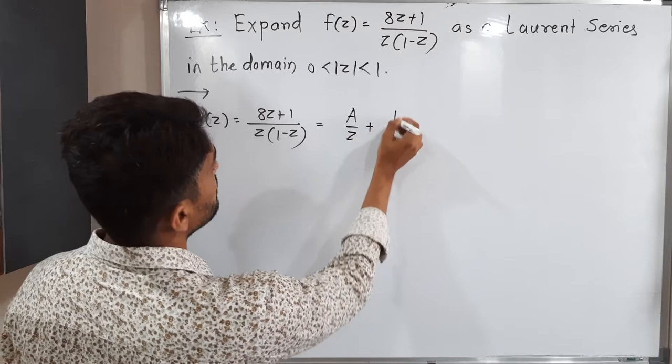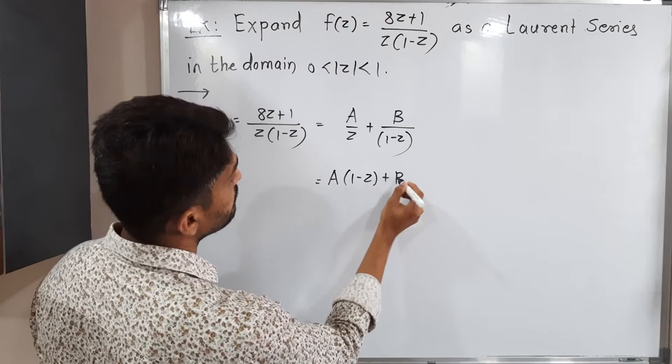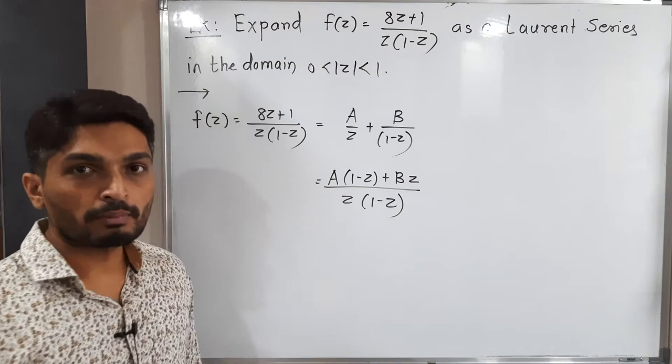This is equal to what we consider a upon z plus b upon 1 minus z. Now our task is to find values of a and b. Let us cross multiply and simplify.